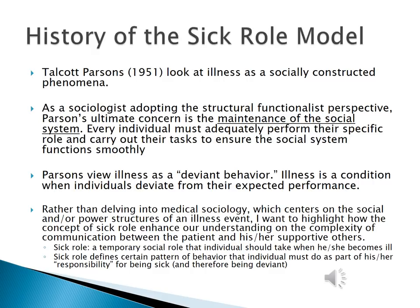As a result, Parsons views illness as deviant behavior. A sick person is unable to perform their designated social roles and social responsibilities. As a result, the system needs to take its responsibility in guiding the individuals, helping them to rehabilitate, to become non-deviant so that one day they can become an integrated social individual again. It is important that Parsons' primary concern is on the control power of the social system — how does the social system exert control on individuals?